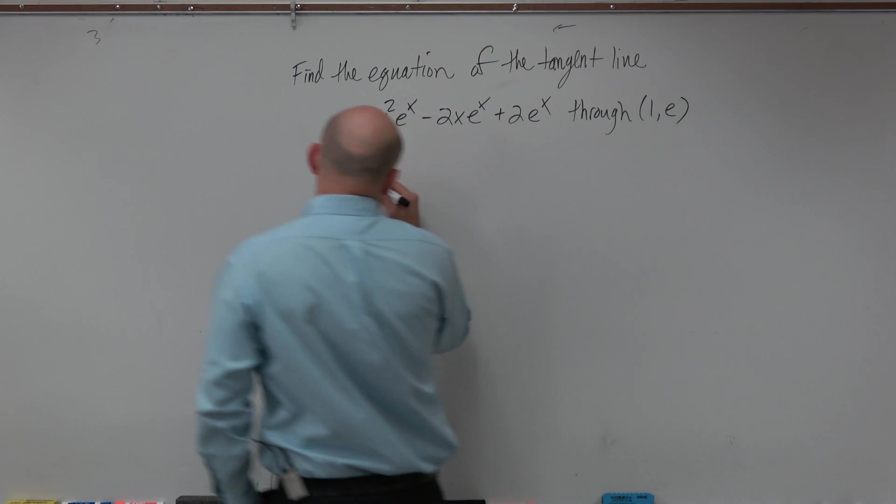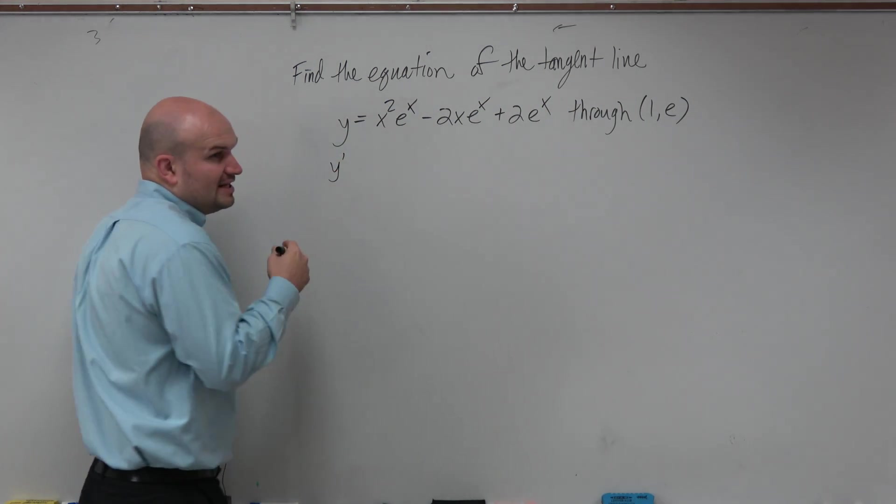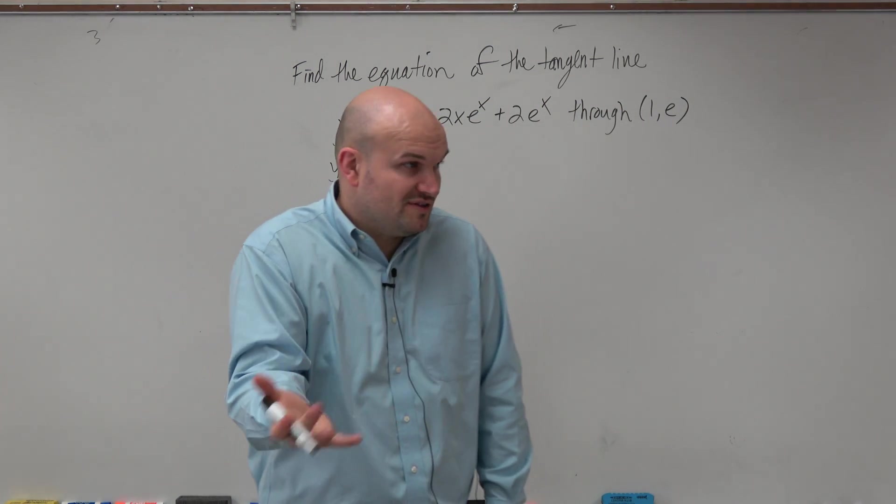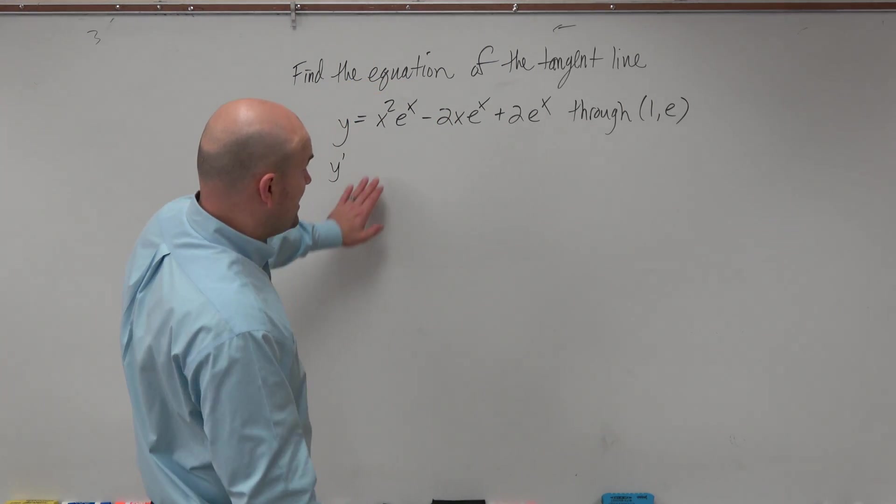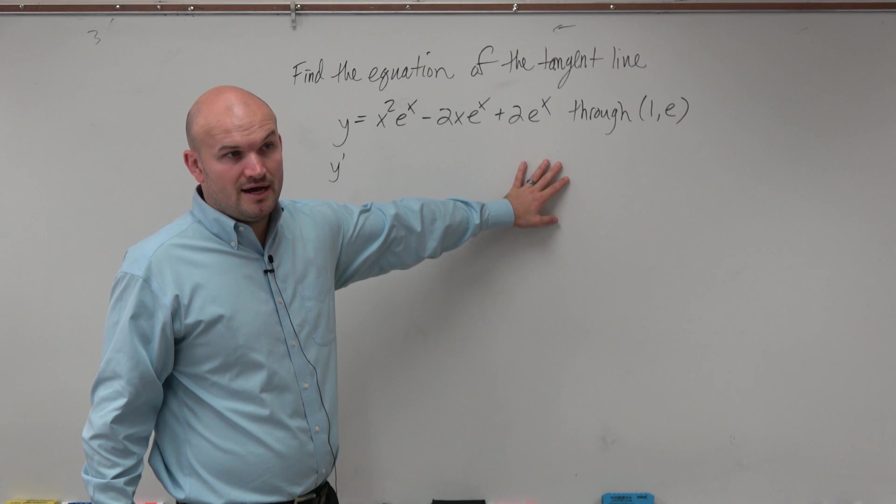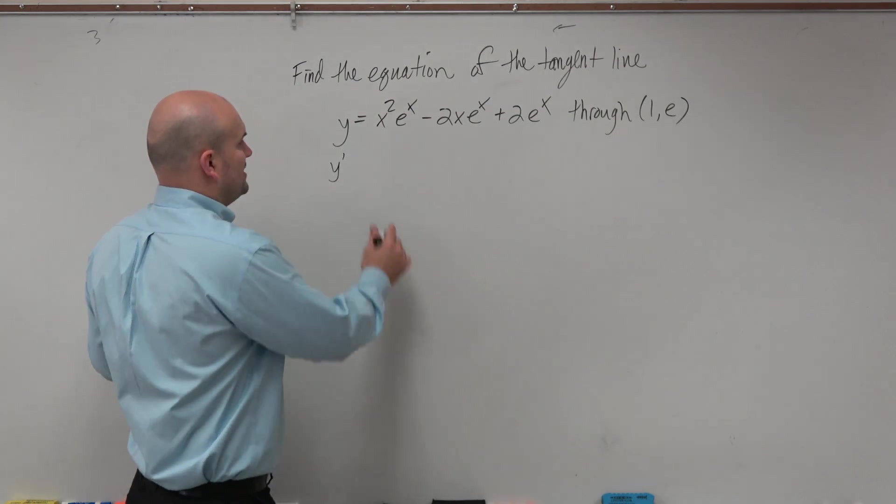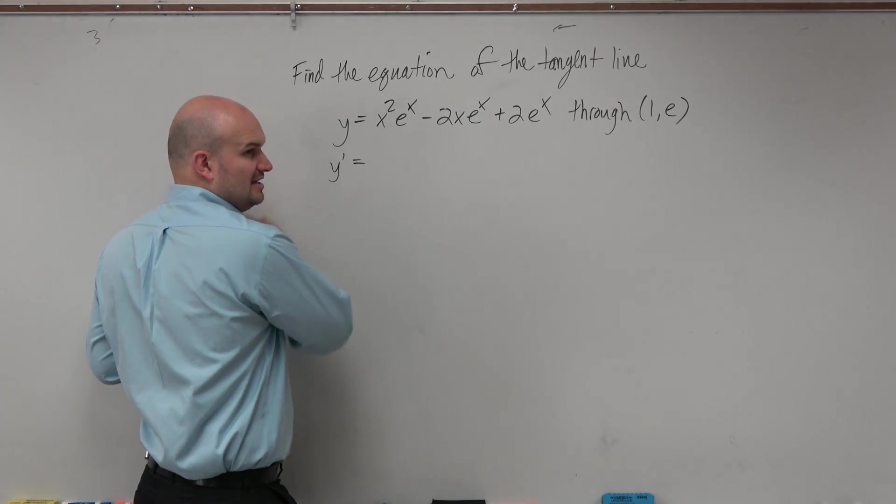So we know that the first derivative is going to give us the equation of the slope, or the equation that represents the slope of this graph. We have no idea what this graph looks like, but if you look at this, we can find the derivative here.